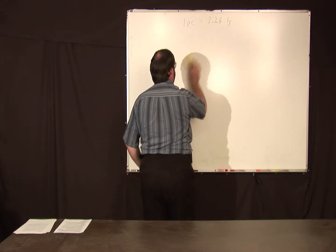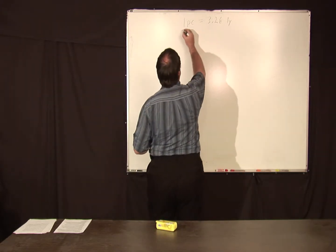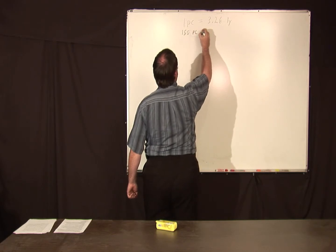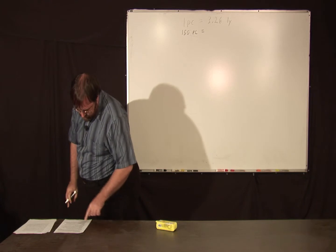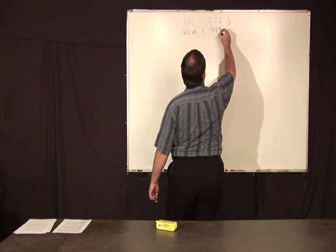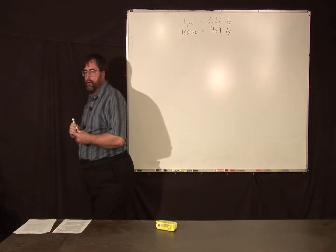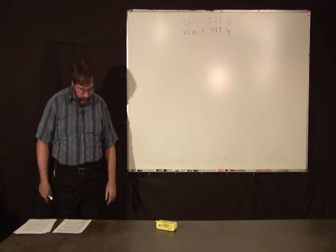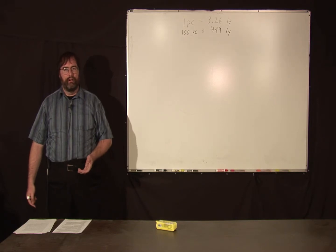But the current state-of-the-art with spacecraft and the like, and this is basically a direct measure of the distance to nearby stars, is 150 parsecs. So 150 parsecs is the limit, which is 489 light years. In a sphere around the Earth of 489 light years, we can directly measure just with geometry the distance to the nearby stars.